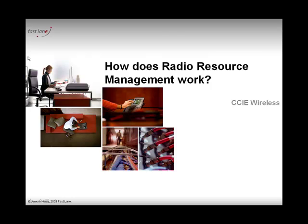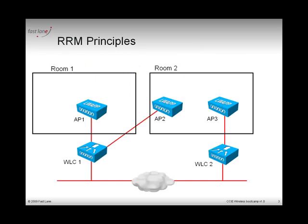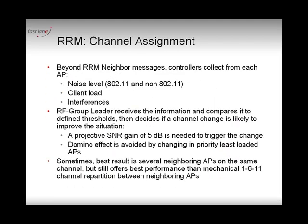In the previous video, we verified how RRM works — how the signals were exchanged between access points and reported to the controllers, so that each controller could know which access points share the same wireless space. From there, the RF group leader would be deciding which channels would be changed and in which way. That's where we are.